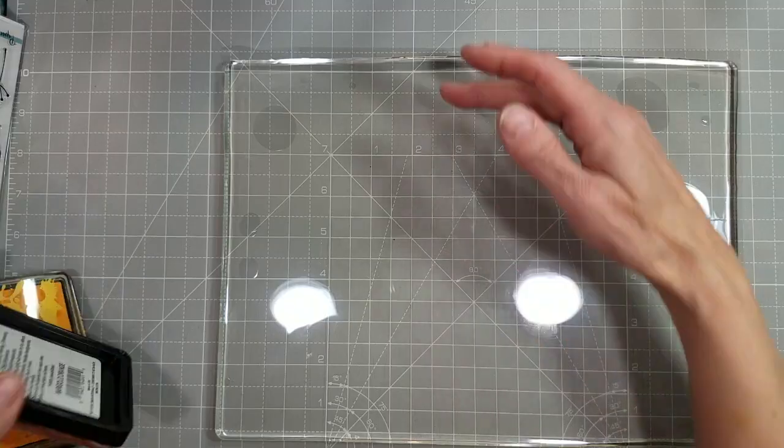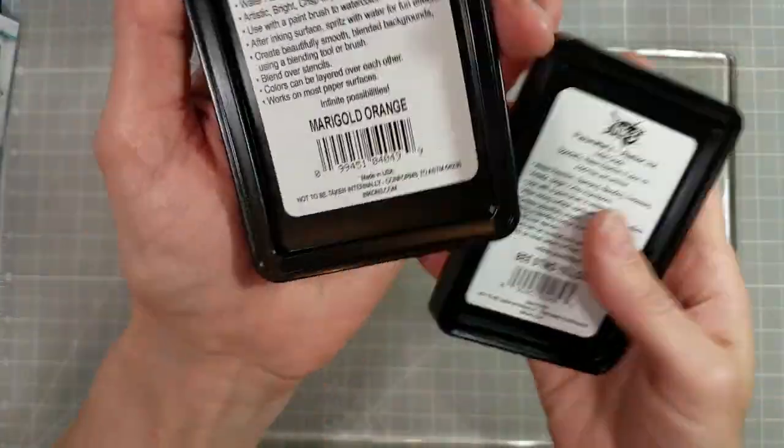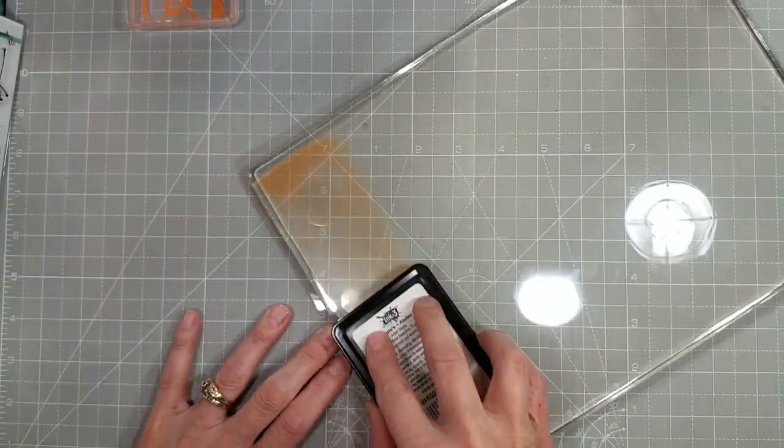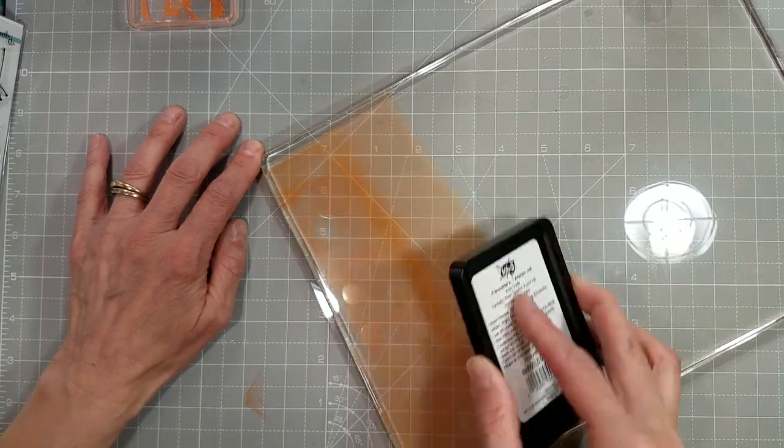If you've never seen a gel press, this is what they look like. This happens to be a 9x12 gel press plate that will fit an entire piece of 8.5x11 paper, which is why I got this ginormous gel plate.